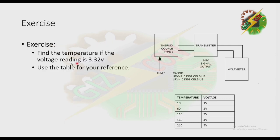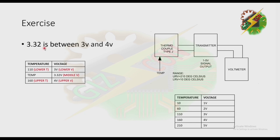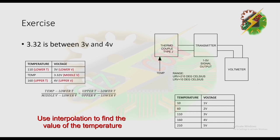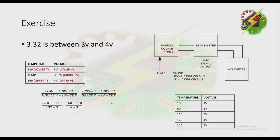Next exercise: find the temperature if the voltage reading is 3.32 volts. Please pause the video and try to solve it yourself. Since 3.32 is between 3 volts and 4 volts, we put 3 volts as the lower and 4 volts as the upper, with 3.32 at the middle. We put the equivalent temperatures from the table. Using interpolation and algebra, the answer is a temperature of 126 degrees Celsius.